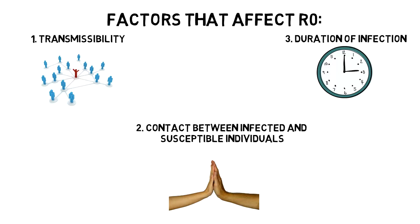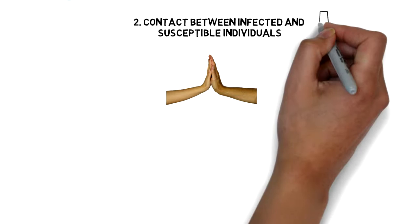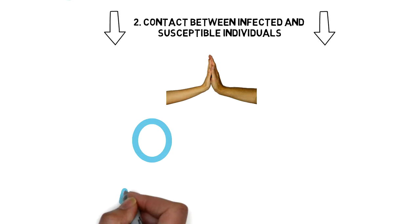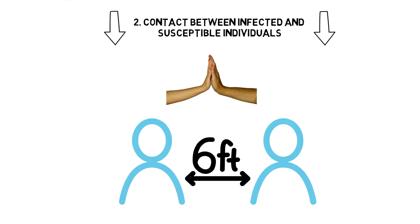If you decrease one or more of those factors, R-naught also decreases. Right now we don't have any tools available to decrease the transmissibility or shorten the duration of SARS-CoV-2 infection, the cause of COVID-19. We do, however, have the ability to decrease contact between susceptible and infectious individuals. This is why we are social distancing — if we minimize contact between healthy and sick people, we decrease R-naught and therefore decrease the number of new infections.